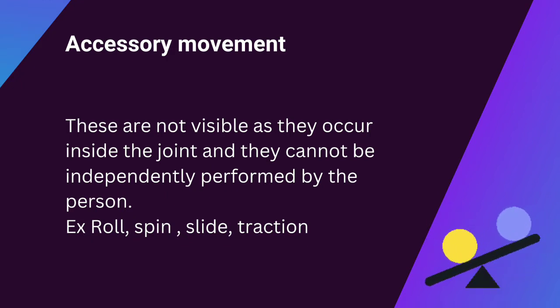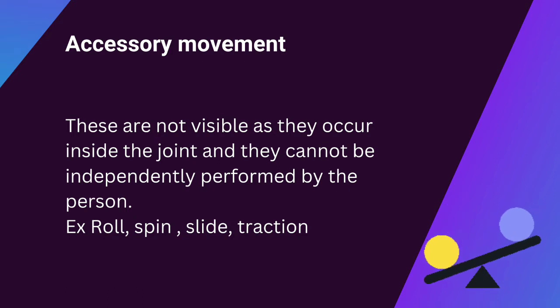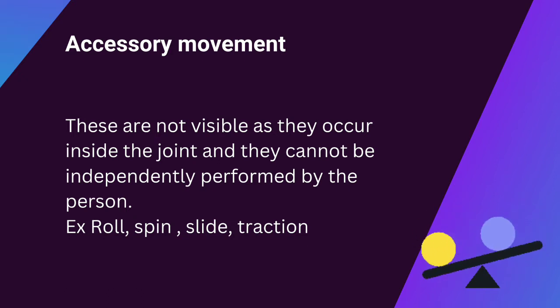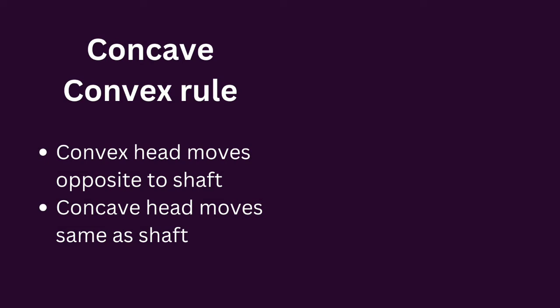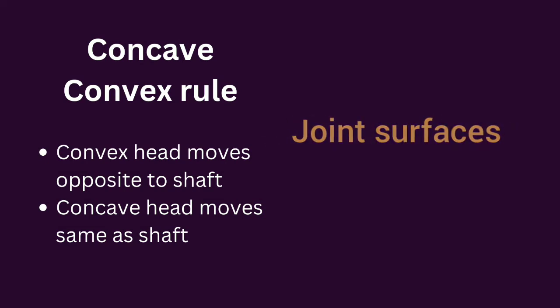Accessory movements are movements which are not visible, as they occur inside the joint and cannot be independently performed by the person. Examples are roll, spin, slide, and traction. Since accessory movements are produced by the joint surfaces, one rule comes out to be very significant.